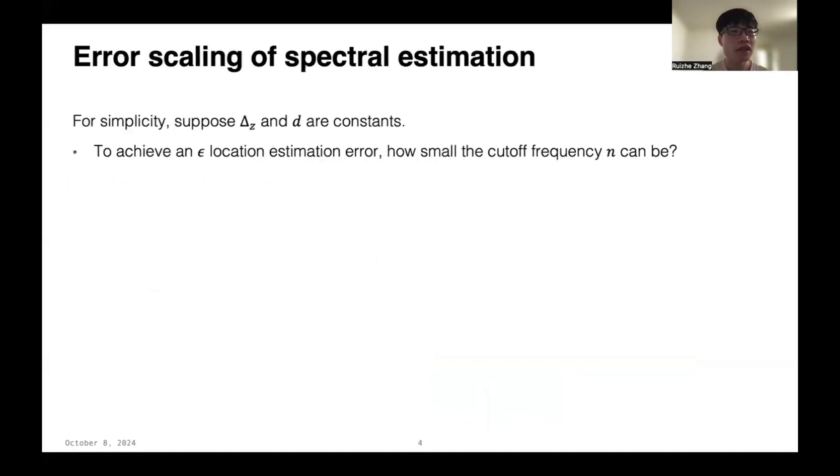So, what is the best error scaling of spectral estimation can we achieve? For simplicity, in this talk, let's only focus on the location estimation and assume the parameters Δz and d are all constants. Then, in this setting, to achieve an ε location estimation error, how small the cut-off frequency n can be.